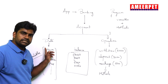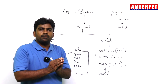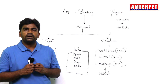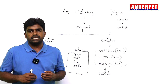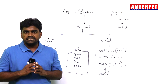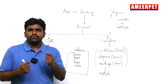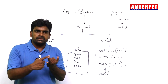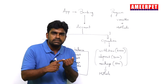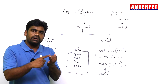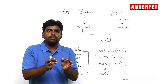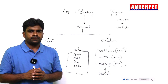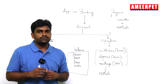Variables store the information; methods perform operations on information. So why are you learning programming? To develop applications. Applications consist of programs. One program, for example, is an account. Programs consist of variables and methods — variables to store information, methods to perform operations on information. Hope you understood, we'll meet in the next video, thank you.